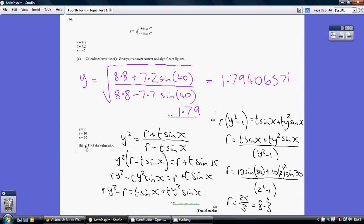For part B, we really need to do the rearrangement first before we substitute in. We start off by undoing the square root by squaring. So we get y squared equals everything underneath the square root.